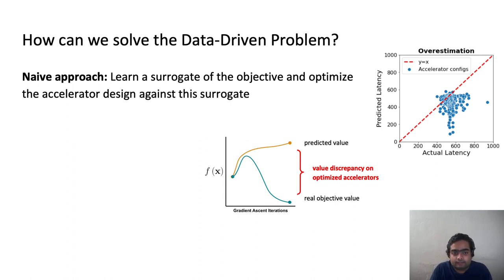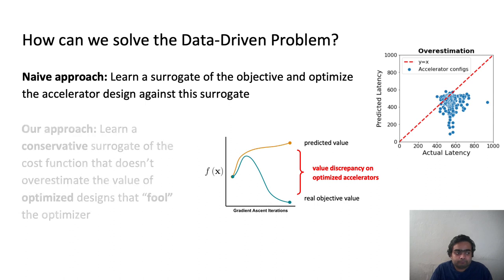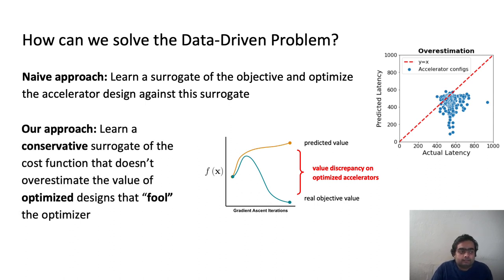And so as you see on this scatter plot on the slide, turns out that most of the accelerators found by this method have a much larger actual latency compared to their predicted latency, meaning that the trained model thinks that they are actually quite good, but they aren't actually that good when you actually evaluate them under the simulator. So what our approach does here is that it essentially trains a conservative surrogate model that makes sure that this fooling of the optimizer does not happen on these points that you find during optimization.